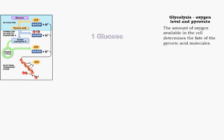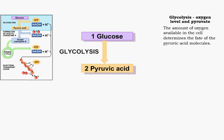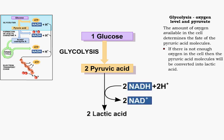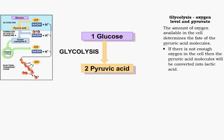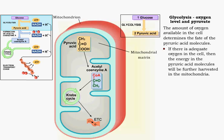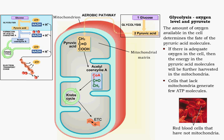Many more molecules of ATP can be generated from the energy stored in the pyruvic acid molecules. However, this energy can only be harvested if the cell is well oxygenated. If there is inadequate oxygen, then the pyruvic acid will be converted into lactic acid. If there is adequate oxygen, then the energy in the pyruvic acid will be further harvested in the mitochondrion. Cells that lack mitochondria, red blood cells for example, can generate only a few ATP molecules from glycolysis.